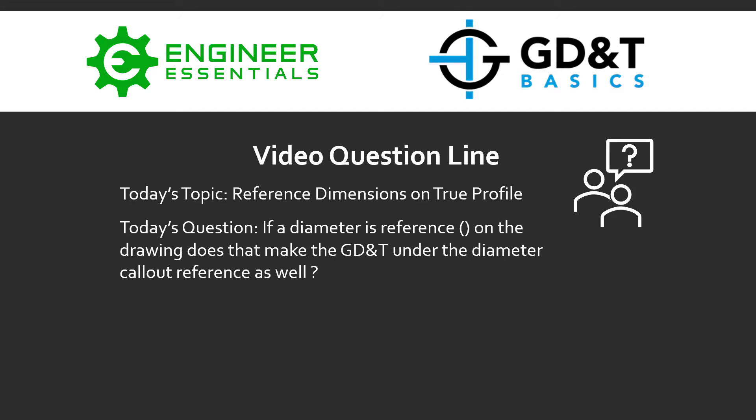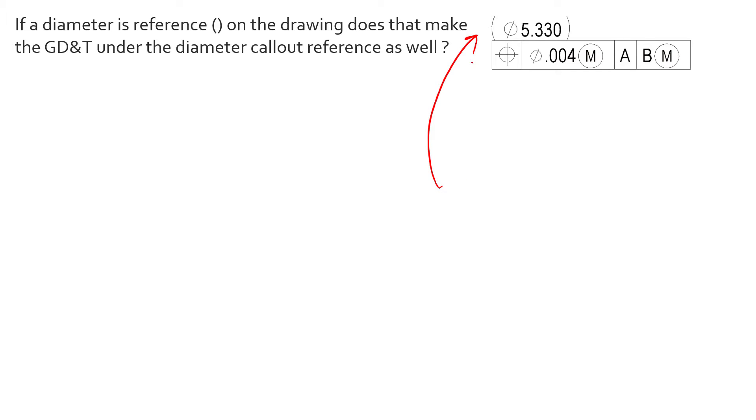Hey everybody, Jason here again with GD&T Basics and the Video Question Line. Today's topic is on reference dimensions and true profile. So today's question that was submitted is: if a diameter is in reference on the drawing, does that make the GD&T under the diameter callout a reference dimension as well? Here's an example of a reference dimension with a geometric tolerance attached to it.